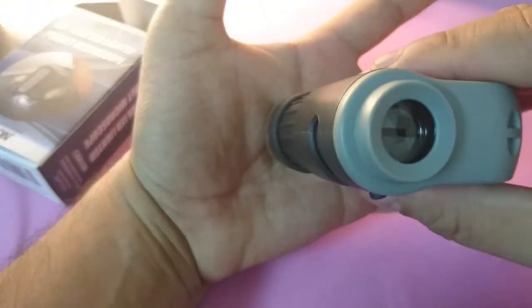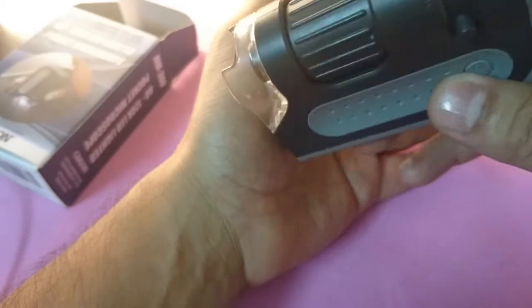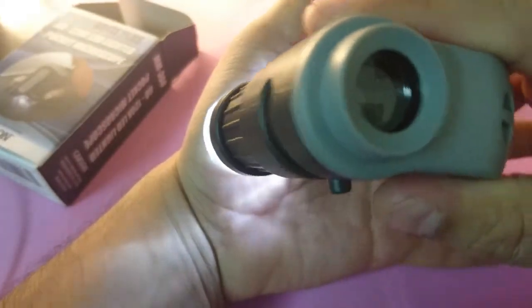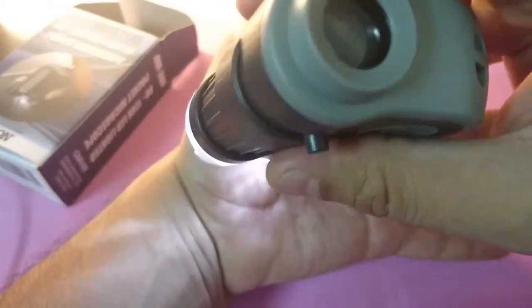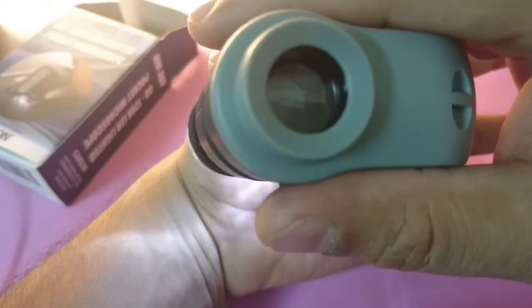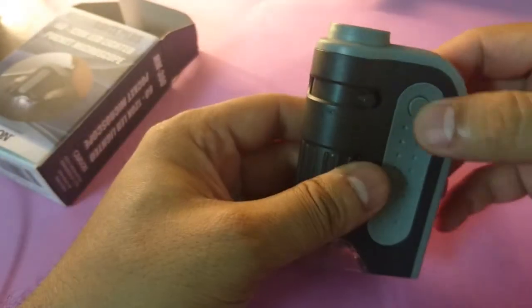For example you can just look it on your skin directly, turn it on and look on your skin through your eyes, focus it with manual focus then zoom the eyepiece. It's very easy.